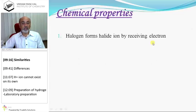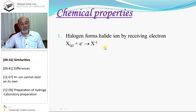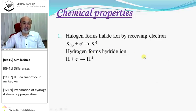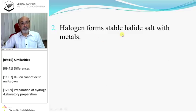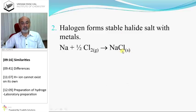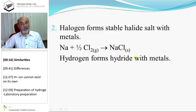These are some similarities: halogens form halide ions by receiving an electron; hydrogen forms hydride ions by receiving an electron. Halogens form stable halide salts with metals; hydrogen forms hydrides with metals.